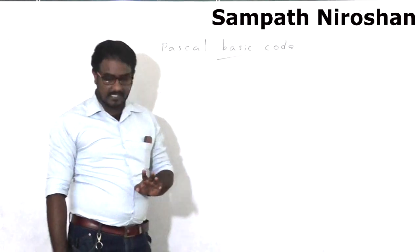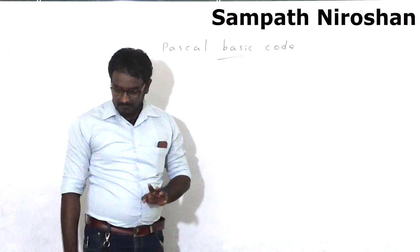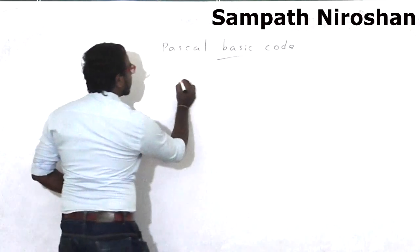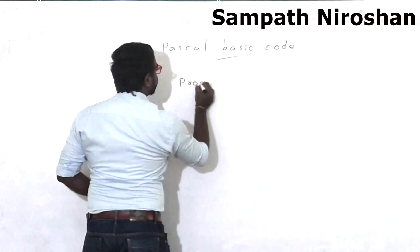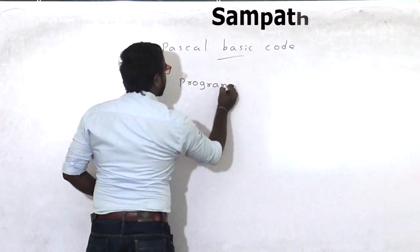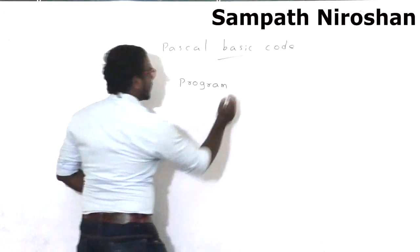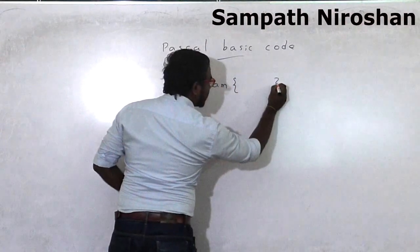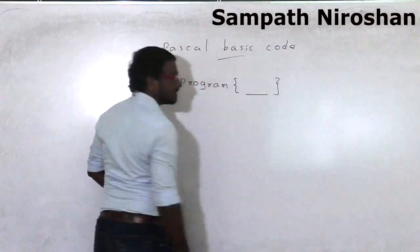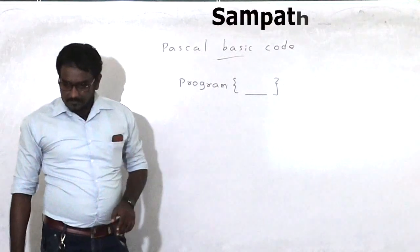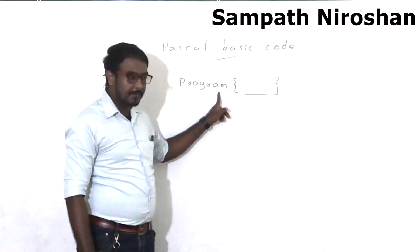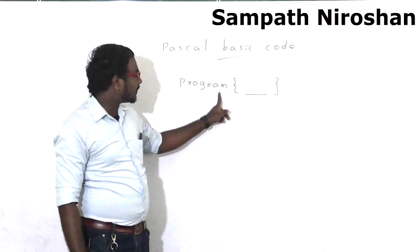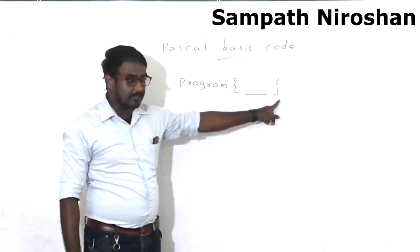The first place you are starting a program, the first code is 'program'. After program, this is the place you need to give it a name. Whatever the name is, the name goes here. You have the first keyword program, and after program you don't put curly braces.